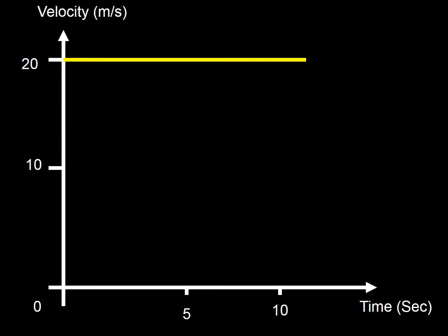Now if we look at velocity-time graphs, people sometimes get confused because they look similar but mean something different. From now on I'm looking at velocity — how fast you're going. Velocity is just like speed, except velocity is a vector, which means it has a direction as well as a size.